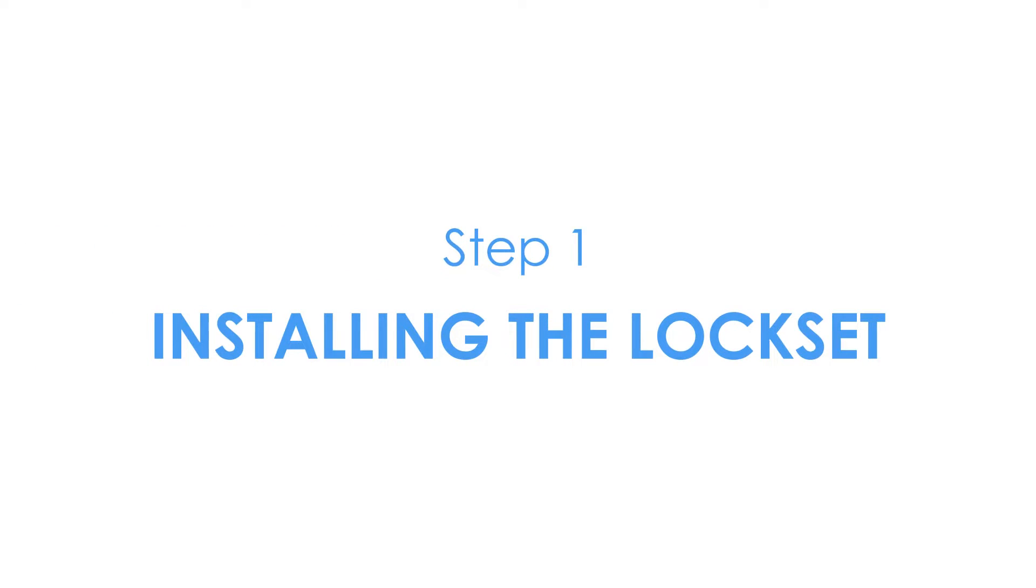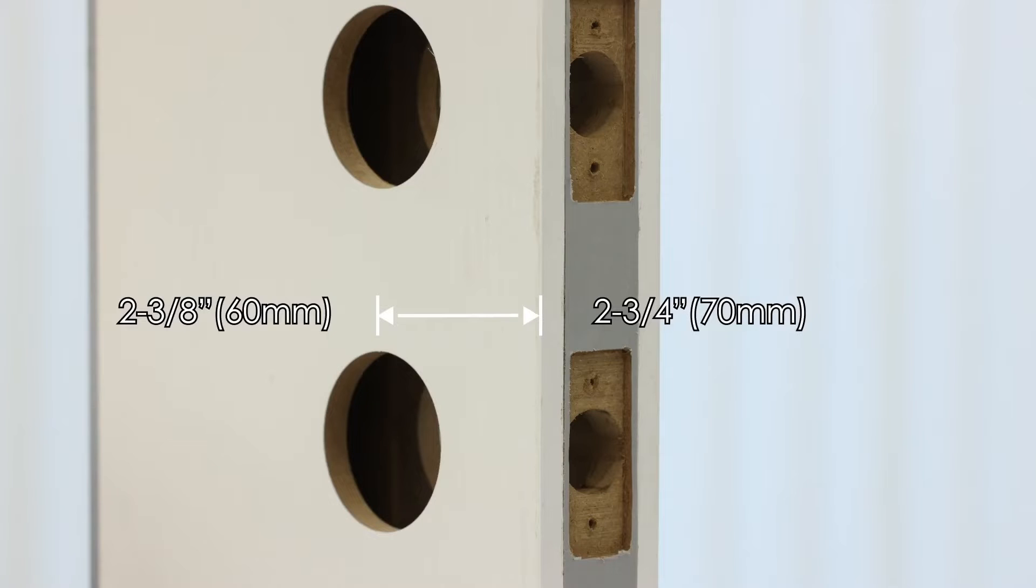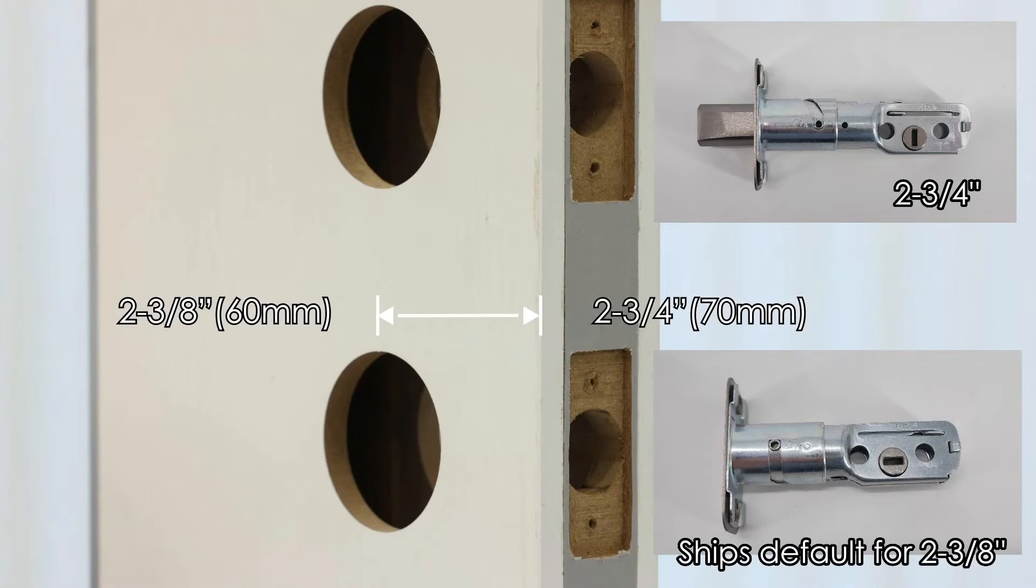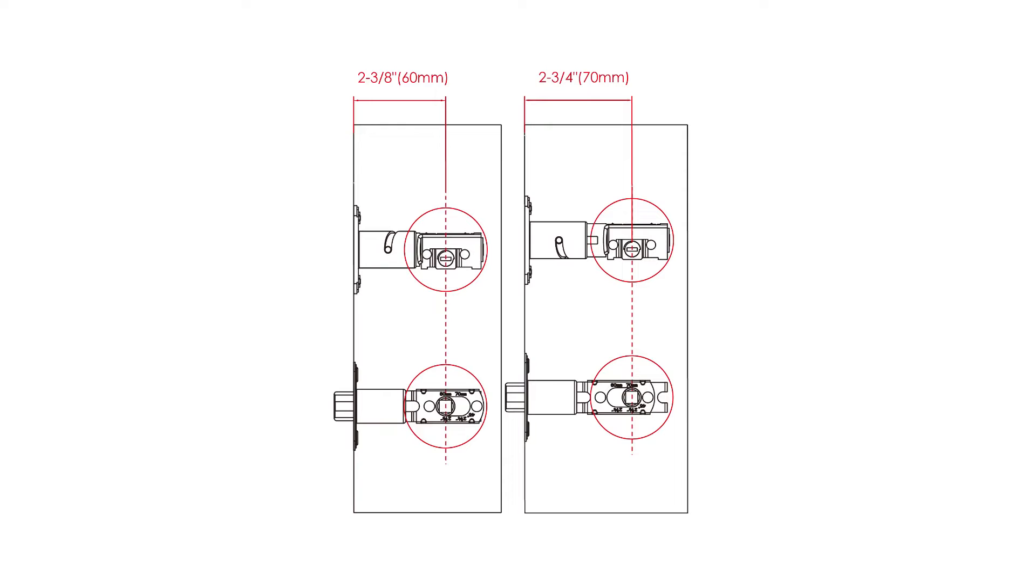Step 1: Installing the lock set. Measure the distance from the center of front door hole to the edge of your door to determine the backset. Adjust latch bolt and deadbolt according to the backset of your door.